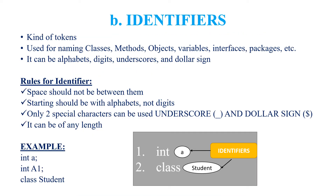The second type of token is identifier. What are identifiers? Identifiers are normally used for naming class, methods, variables, objects, packages, interface, etc. For naming an identifier, we can use digits, underscores, alphabets and dollar signs. But we have to follow certain rules for naming an identifier.